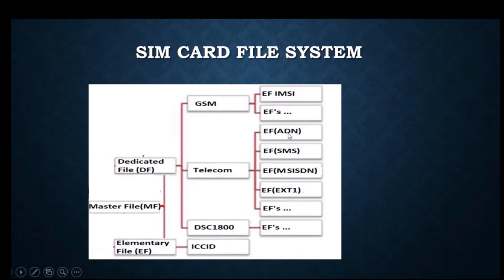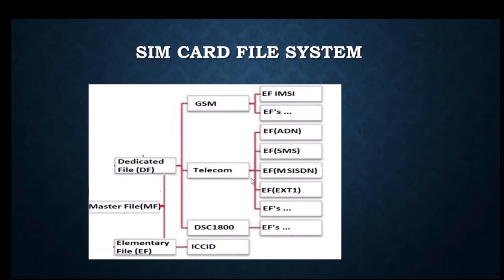Under the Telecom files, ADN stands for Abbreviated Dialing Numbers. When a subscriber dials an unknown number or receives a call from an unknown number, that detail is stored in ADN. Another file is SMS — Short Messaging Service — which stores all messages sent and received by the subscriber. MSISDN stands for Mobile Station International Subscriber Directory Number.